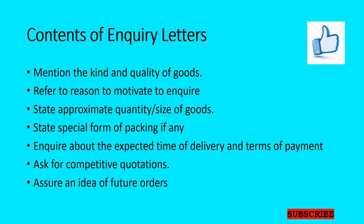If possible, in case of an FMCG product, the enquirer must ask for a sample — such as soap or detergent. Then he should ask about other policies; for example, if the buyer wants to purchase goods on credit basis, what are the policies with respect to availing credit. He should also assure the seller of an idea of future orders — meaning the enquirer must assure the seller that if the terms and conditions are favorable, then he will place his trial order or first order with him.